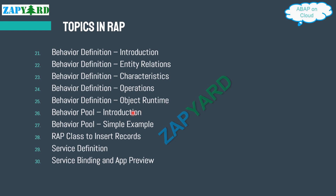We'll also give you the introduction to behavior pool. Behavior pool will also be shown as a live example, and how all the behavior definition related entities and characteristics will be dealt through an example. We'll also try to look into the wrap class to create records using behavior definition. And we will try to create OData services, which SAP now calls service definition, and what is service binding — it will also be looked into along with application preview.